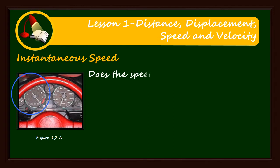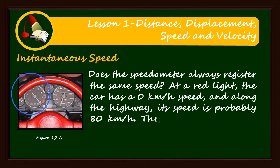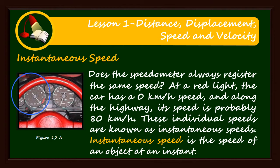Does the speedometer always register the same speed? At a red light, the car has a zero kilometre per hour speed, and along the highway, its speed is probably 80 kilometre per hour. These individual speeds are known as instantaneous speeds. Instantaneous speed is the speed of an object at an instant.